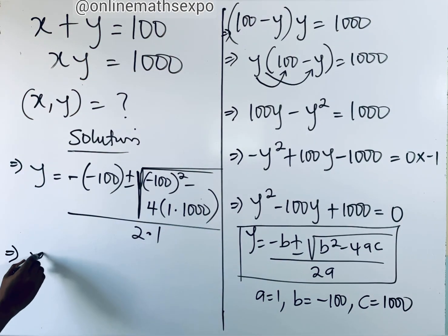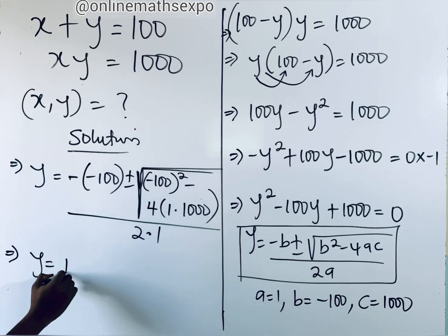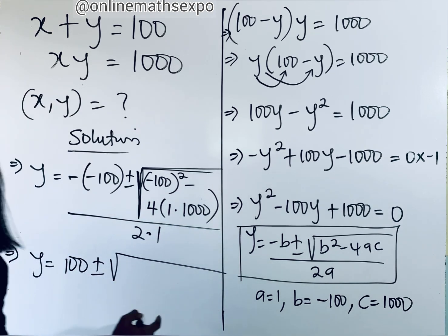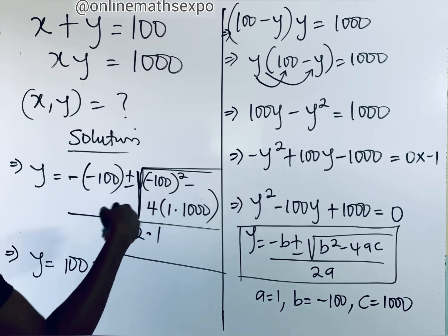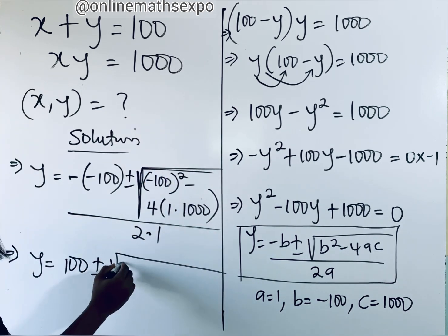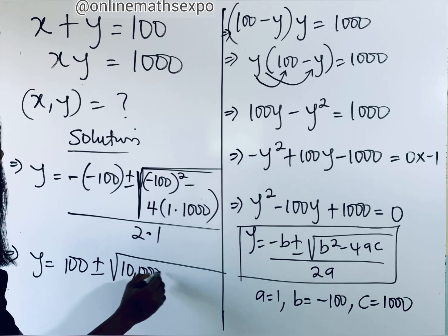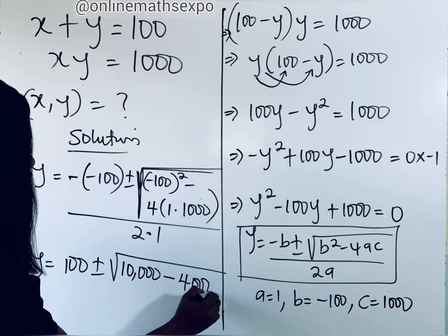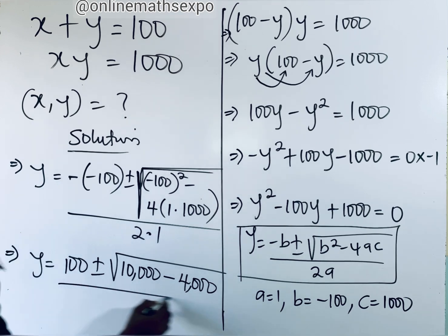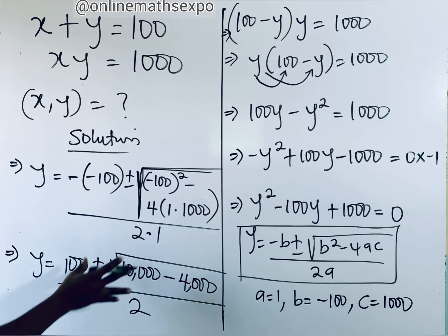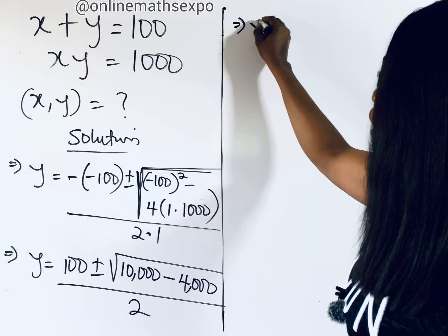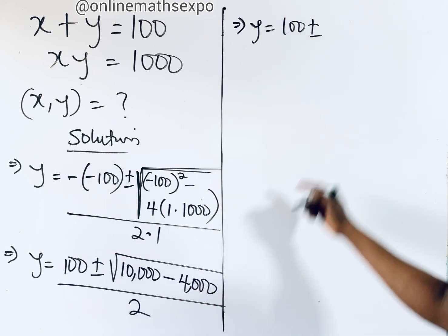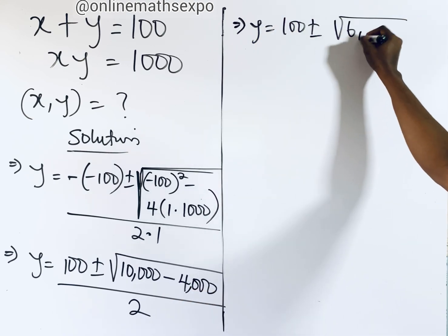Simplifying: (negative 100) squared gives us 10,000. Then 4 times 1 times 1000 gives us 4,000. So under the square root we have 10,000 minus 4,000, which equals 6,000. The denominator is 2. So y equals 100 plus or minus the square root of 6,000, divided by 2.